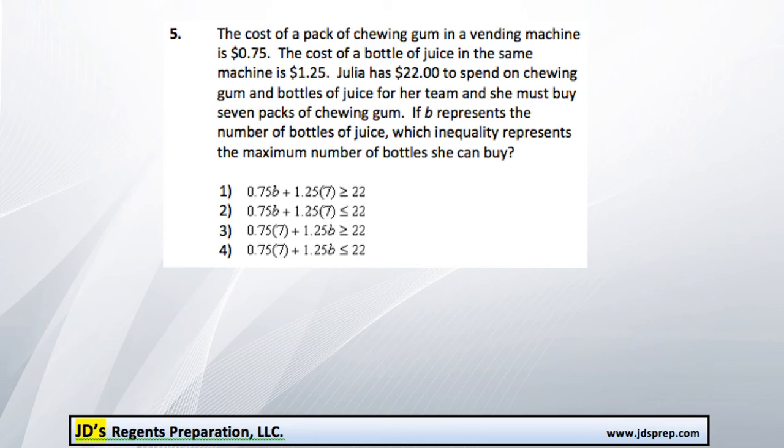This is problem number 5 from the August 2015 Algebra Regents exam. The cost of a pack of chewing gum in a vending machine is 75 cents, so we've got gum at 0.75.